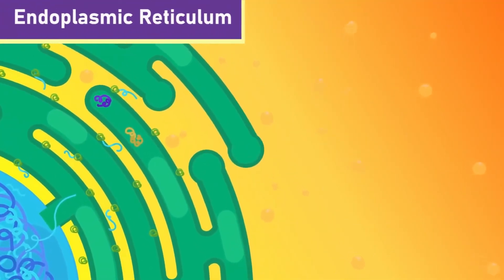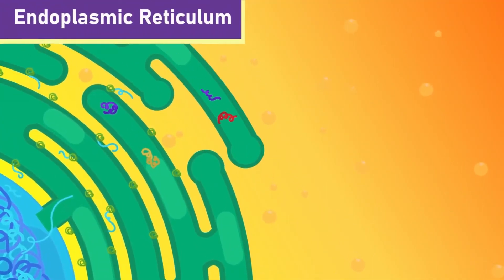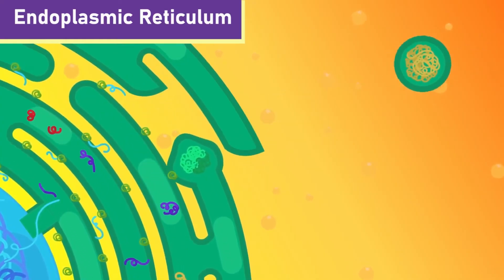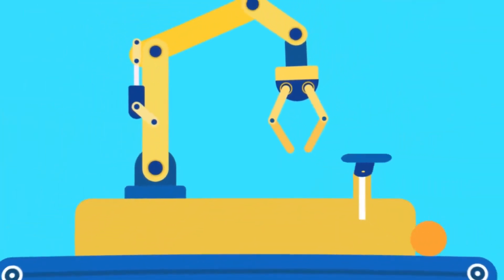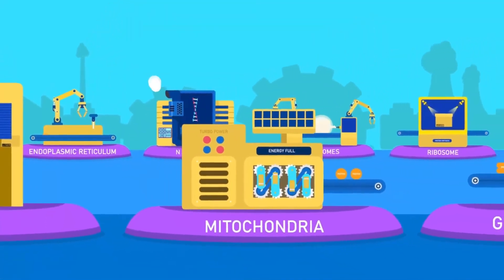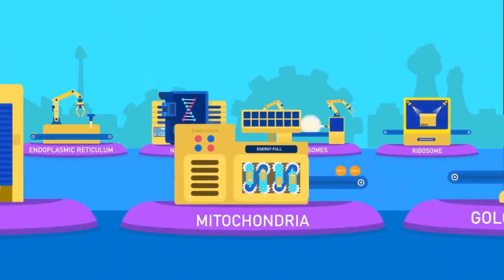The endoplasmic reticulum is a major organelle that is responsible for protein transportation and synthesizing lipids and some hormones. As eukaryotes are like complex biological factories, many types of cell organelles are present, and each is responsible for different functions.